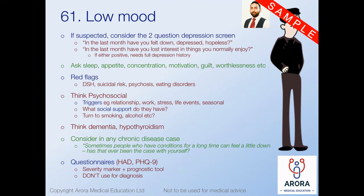Always think about the support system - who does this person have to turn to if things get worse? Sometimes when people feel low they turn to habits like smoking or alcohol to cope - link these questions back to the presentation so it doesn't look like a list. Think about links with dementia and hypothyroidism from a physical point of view. And consider depression or low mood in any chronic disease scenario: 'Sometimes when people have had conditions for long periods of time it can get them down - has this ever been the case for you?'